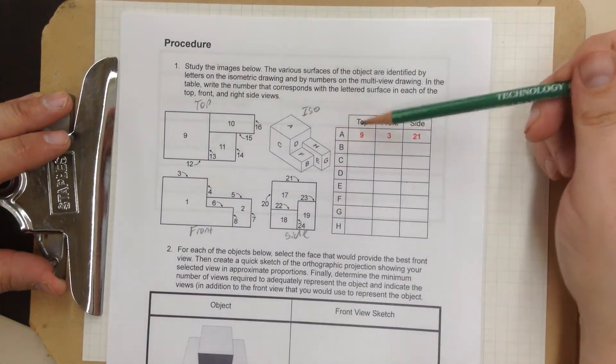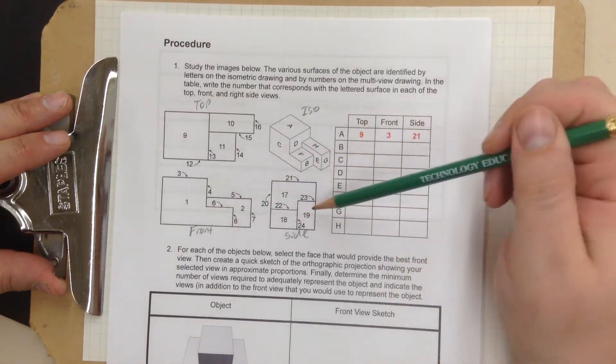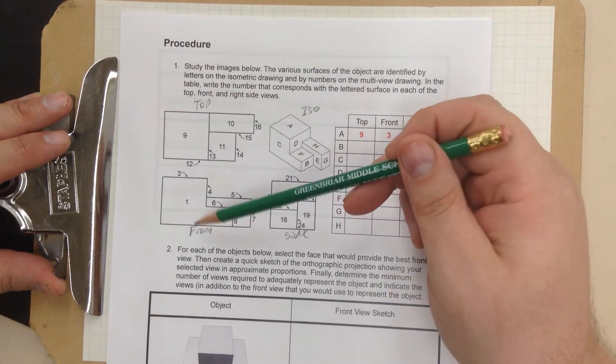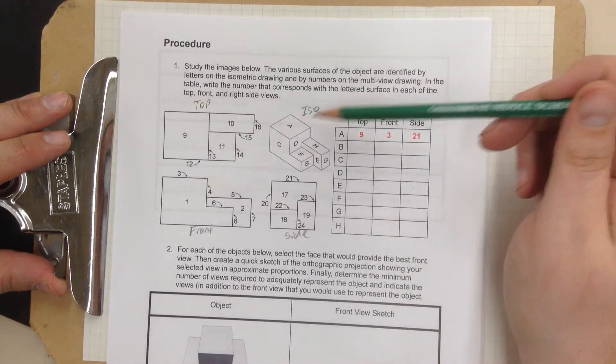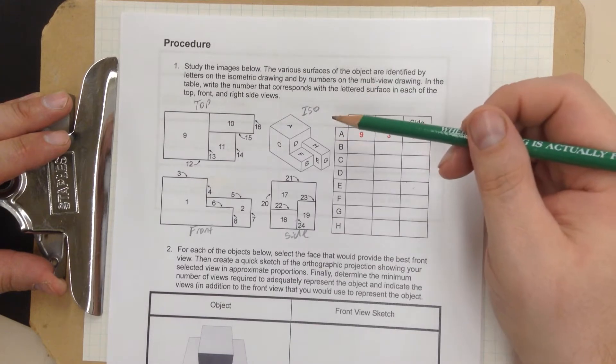You're going to see that. ISO, top, front, side. And remember, this orientation never changes. It's always front, always top, always side, always ISO. And they're always located in the same place.